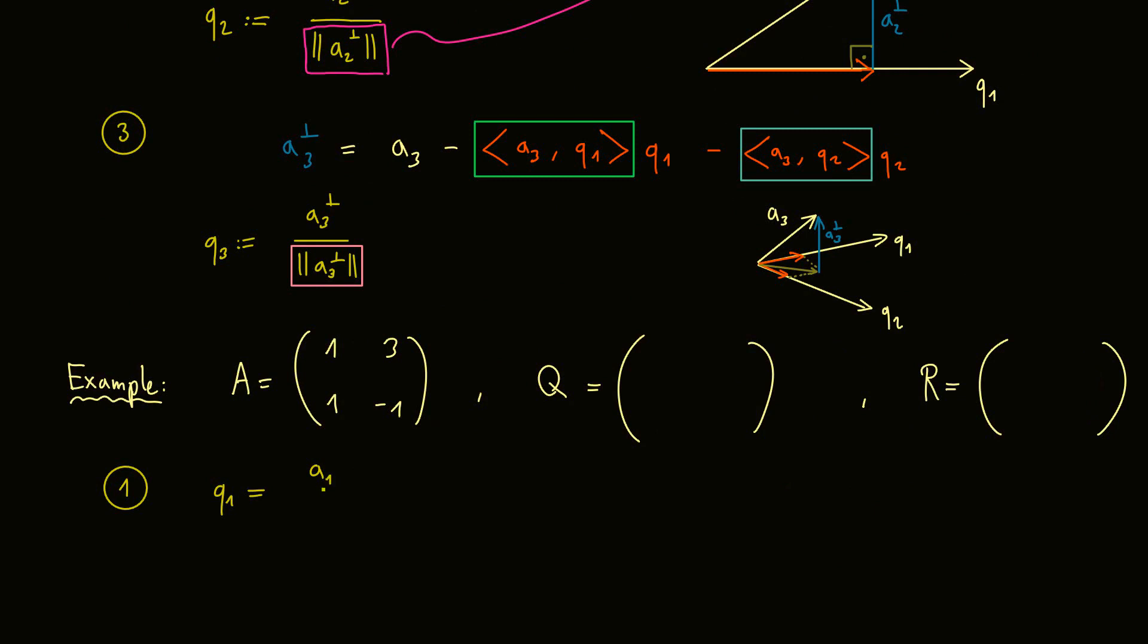First we calculate Q1, which is A1 divided by the norm of A1. So we can rewrite that as 1 divided by... Okay, let's write that in full form. 1 squared plus 1 squared. And here's the vector (1, 1). And this is obviously just 1 divided by the square root of 2. And (1, 1). Okay, so this is the number we put into R. Here. And the full vector we can put into Q as well. So this would be 1 divided by the square root of 2. And here as well.